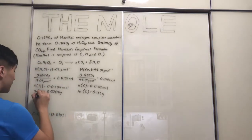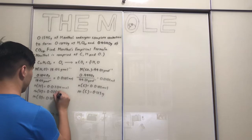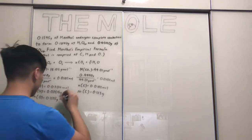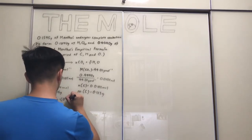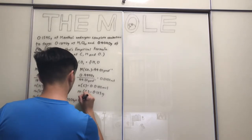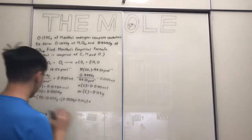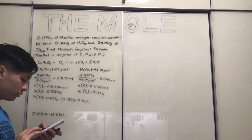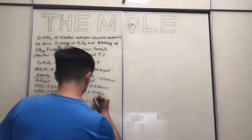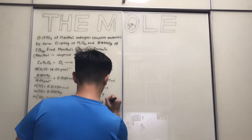The mass of oxygen equals the total mass of menthol minus the sum of the hydrogen and carbon masses: 0.1595 minus (0.0206 plus 0.123) grams, giving a mass of oxygen equal to 0.0163 grams.